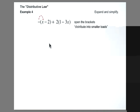Negative 1 times x is negative x. Negative 1 times negative 2, same signs, positive 2. 2 times negative 3x, negative 6x.